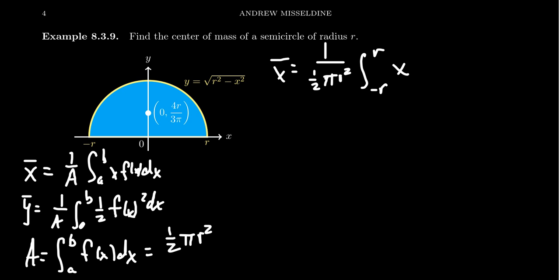Well, since this is a semicircle, we can represent the semicircle by the formula y equals the square root of r squared minus x squared. We plug that in for f of x right here. And so this is the integral that we'd want to compute at this moment.